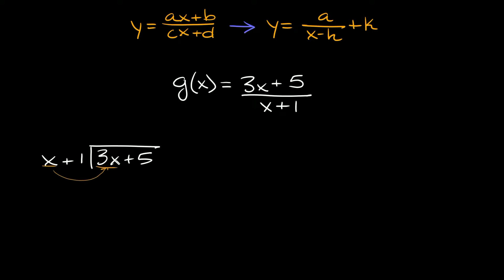Okay now we're going to take our answer and multiply it by this whole thing right here and then we put it down here. So first of all 3 times x that's equal to 3x and 3 times positive 1 is positive 3.